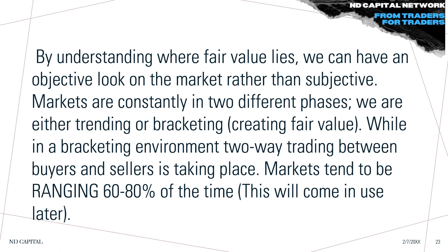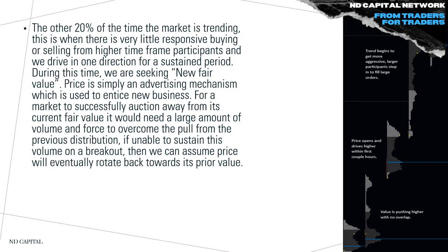By understanding where fair value lies, we can have an objective view of the market. Markets are in two phases: trending or bracketing (range-bound). While range-bound, two-way trading between buyers and sellers takes place — keep in mind any asset is in a range 60–80% of the time. When the market is trending — the other 20% — there is very little responsive buying or selling from higher timeframe participants, and we drive in one direction. During this time we seek new fair value. For a market to successfully auction away from its current fair value, it needs a large amount of volume to overcome the pull from the previous distribution.